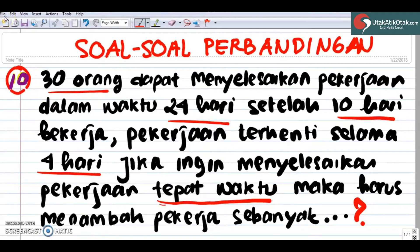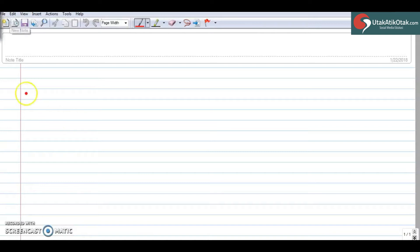Ini soal yang mungkin kita selalu mengatakan ini soal sulit. Ini ada caranya. Sehingga di sini kalau kita ada 30 orang dapat menyelesaikan 24 hari. Waktu 10 hari, 30 orang ini bekerja dalam 10 hari. Jadi 30 orang ini bekerja dalam 10 hari berhenti. Ya, dalam hari yang ke-10 itu berhenti.